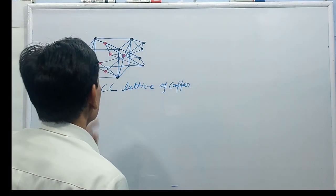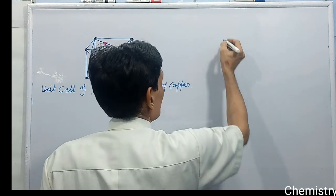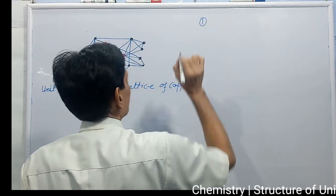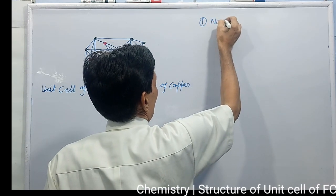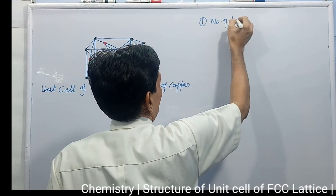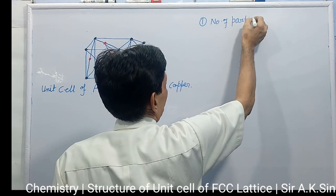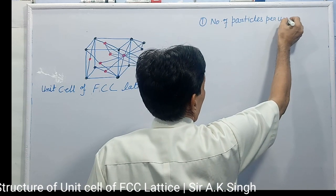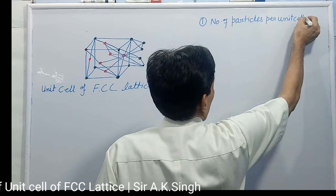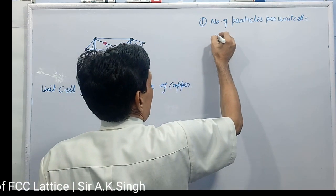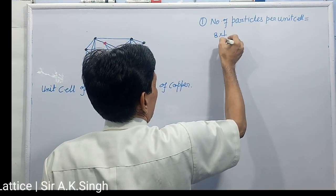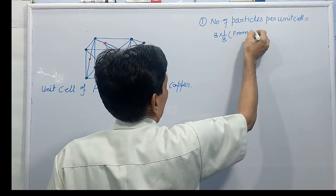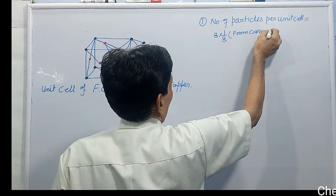Now some important points in this. First is here point number one, number of particles, number of particles of copper per unit cell, equal to 8 into 1 by 8, you can say from corner, from corners.